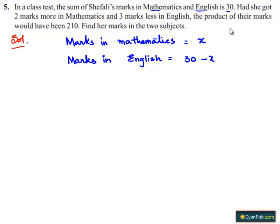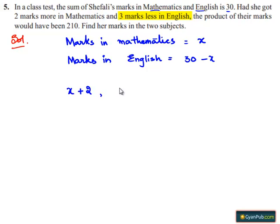Now the given condition is: if she had got two marks more in Mathematics and three marks less in English, the product would have been 210. So two marks more in Mathematics is x plus 2, and three marks less in English is 30 minus x minus 3, which is equal to 27 minus x.